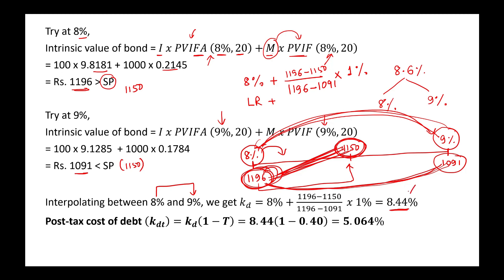Through interpolation, the actual pre-tax cost of debt KD is approximately 8.44%. This is the pre-tax cost of debt. After tax adjustment, the post-tax cost of debt is KD × (1 − T) = 8.44% × (1 − 0.40) = 5.064%. This is the after-tax cost of debt.